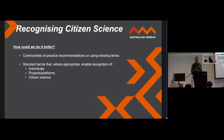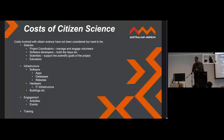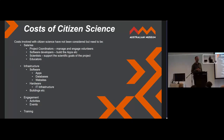How could we do better? Communities of practice that recommend how to use existing standards is one approach. But I think we need standards that specifically give a way of recognising individuals, projects, platforms, and citizen science as a whole. And that's not even talking about the cost of running citizen science projects — which can be significant — so contributions are a benefit, but running those projects is also a real cost.